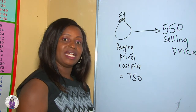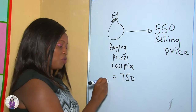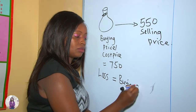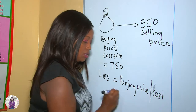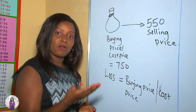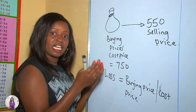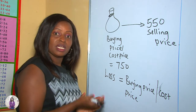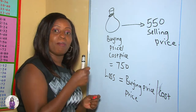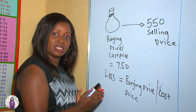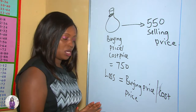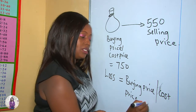For you to realize a loss, you sell an item less than the cost price. Therefore if you want to calculate loss, loss equals buying price — also called cost price. We call it cost price because in any business transaction for which you make a profit or a loss, you have to consider all expenditures incurred: transport, lunch, and the cost of buying the item. All these are put together as expenditures, so buying price or cost price take away selling price.